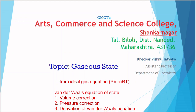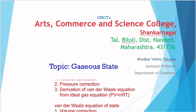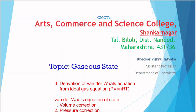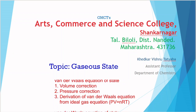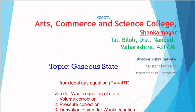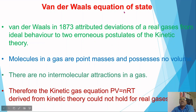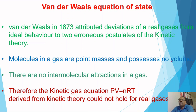Today I am going to explain the next bit from topic gaseous state, that is the Van der Waals equation of state. We have to derive the Van der Waals equation of state. Van der Waals in 1873 attributed deviation of real gases from ideal behavior to two erroneous postulates of the kinetic theory: molecules in a gas are point masses and possess no volume, and there are no intermolecular attractions in a gas.